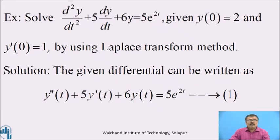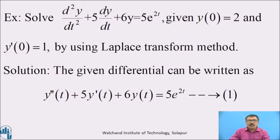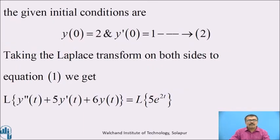Example: Solve d²y/dt² + 5·dy/dt + 6y = 5e^(2t), given y(0) = 2 and y'(0) = 1, using the Laplace transform method. Solution: The given differential equation is written as y''(t) + 5·y'(t) + 6·y(t) = 5e^(2t). Call this equation 1. The given initial conditions are y(0) = 2 and y'(0) = 1. Call this equation 2.